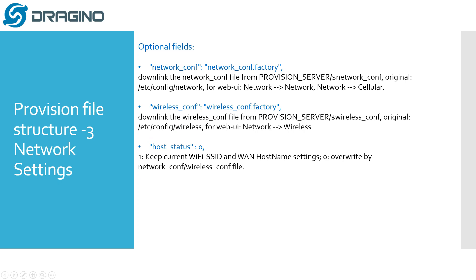Because each gateway has its own Wi-Fi SSID and hostname, these differ from gateway to gateway. There is an option called 'keep status': when set to 1, the gateway will keep its current Wi-Fi SSID and hostname settings. When set to 0, the gateway will use the Wi-Fi SSID and hostname from the downloaded network configure and wireless configure files.